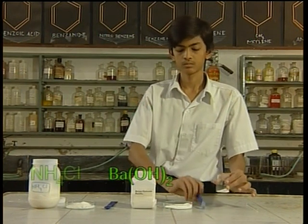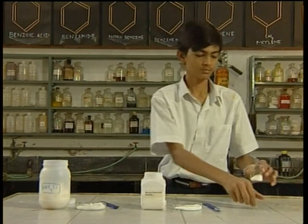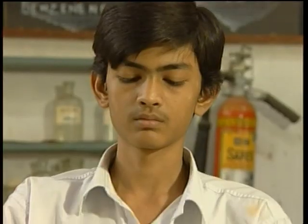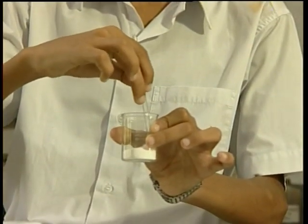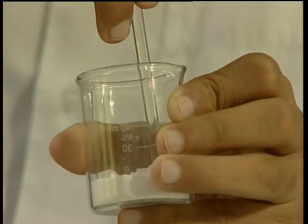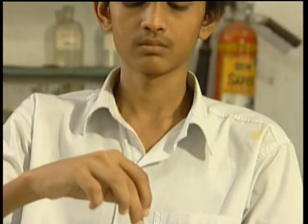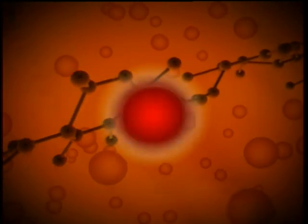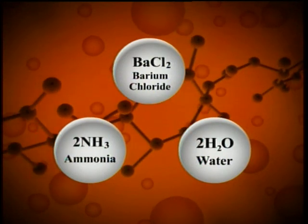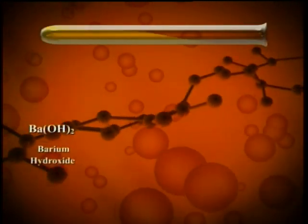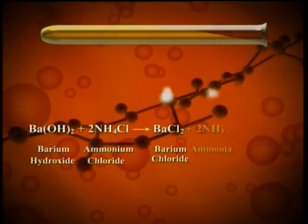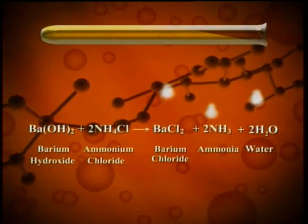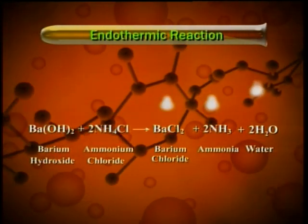Let's take another example of an endothermic reaction. When barium hydroxide is added to ammonium chloride in a beaker and mixed with a glass rod, it results in the formation of barium chloride, ammonia, and water. A lot of heat energy is absorbed during this reaction, causing the temperature of the bottom of the beaker to become very cold. Ba(OH)₂ + 2NH₄Cl → BaCl₂ + 2NH₃ + 2H₂O. It is an endothermic (heat-absorbing) reaction.